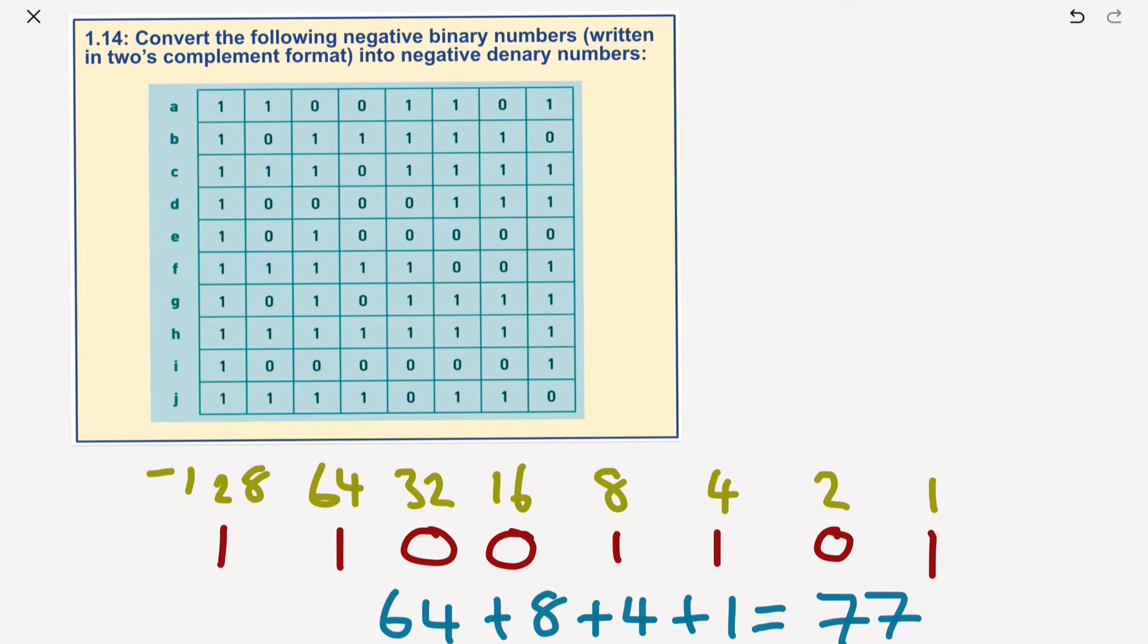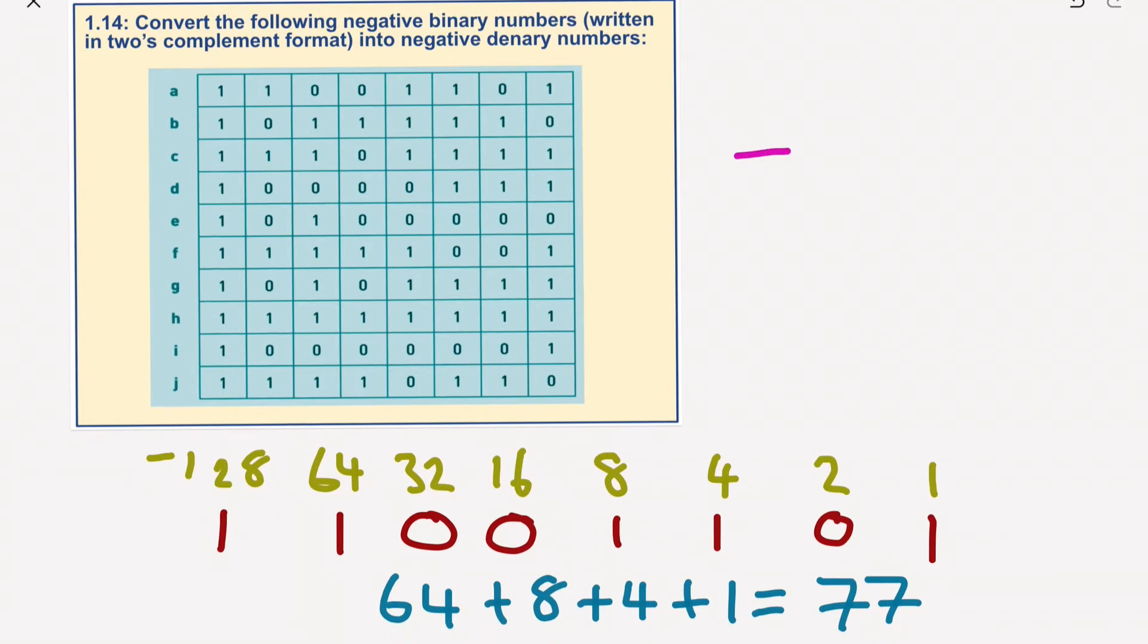So now if I go up at the top here and I go minus 128 plus 77, obviously on a calculator this would be a lot easier, minus 128 plus 77 would give us an answer of negative 51. So basically I added that number to this one here. I'll pop this in, negative 51.